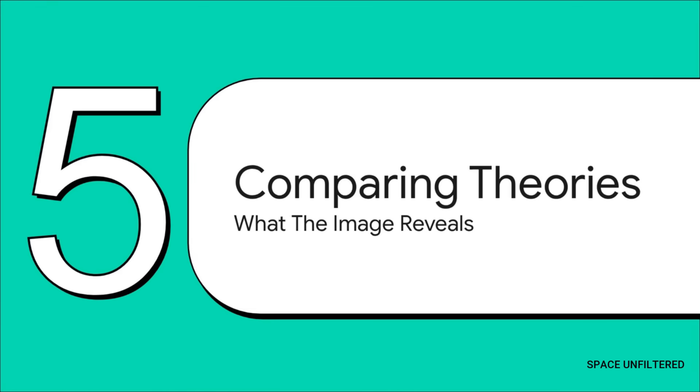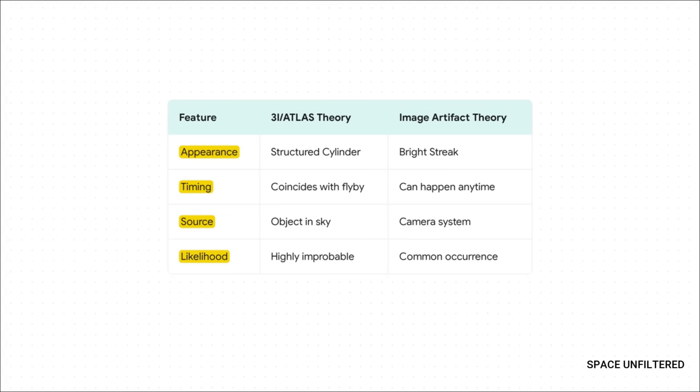So, now we have two very different ideas on the table. One is a spectacular, once-in-a-lifetime astronomical event. The other is a common, well-understood camera glitch. So let's put them head-to-head and see how they stack up. The biggest point for the 3I-Atlas theory is without a doubt the timing. It's a powerful coincidence. But the key difference is the source. Is it an actual object in the sky, or an effect from inside the camera? And when you get to likelihood, well, image artifacts are a known and common part of rover imagery.